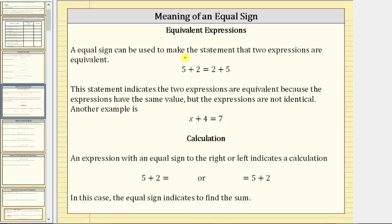An equal sign can be used to make the statement that two expressions are equivalent. As an example, we have five plus two equals two plus five. This statement indicates the two expressions are equivalent.